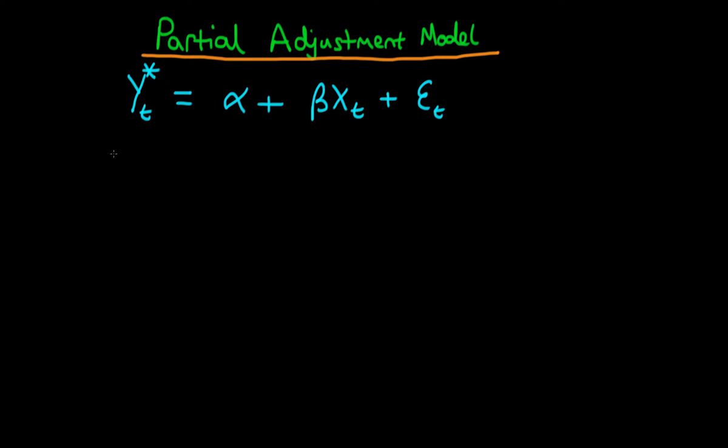The idea is that the value of y which we actually observe differs from its true or equilibrium value due to some sort of inertia. The change in y is given by some parameter theta times the difference between the true equilibrium value of y and what it was in the last period.